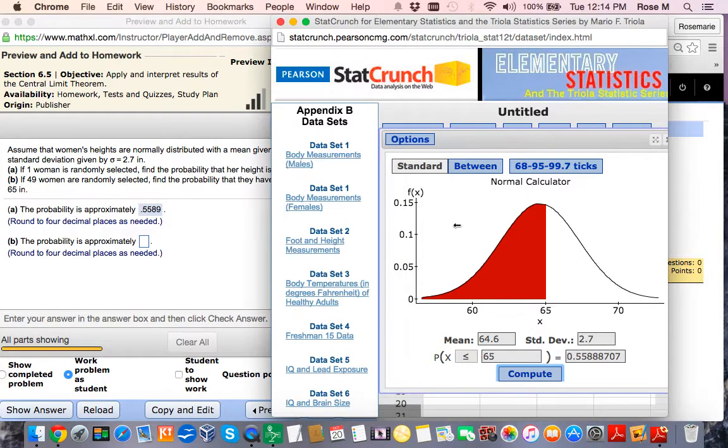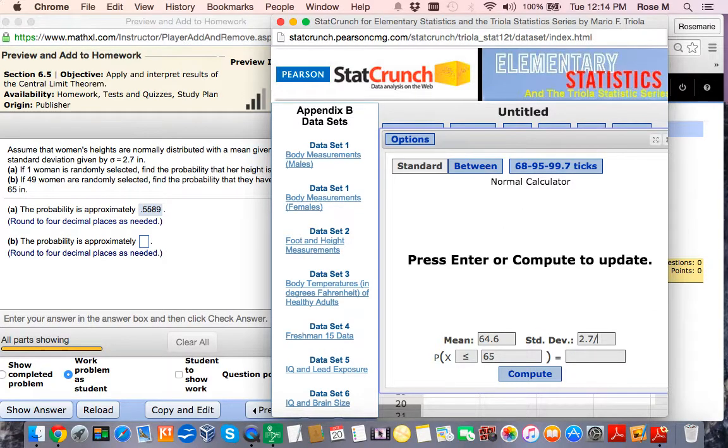Now this is very easy to do in StatCrunch. All you have to do is go to the standard deviation, hit the divide symbol, and type in SQRT for square root, open parenthesis, and enter in the sample size, which was 49 in this problem. And then close the parentheses, and we're leaving it with 65 because that was part of the question, and hit Compute.